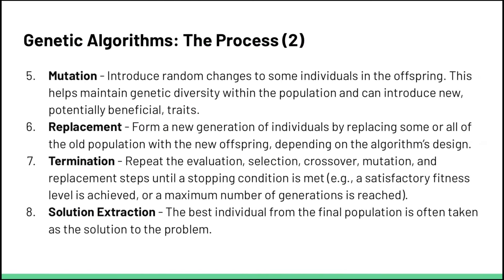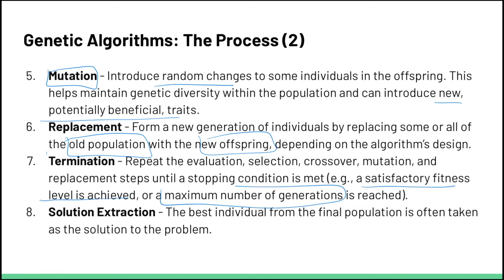Once we've combined both individuals together, we want to introduce some random changes to add genetic diversity and possibly get new solutions we haven't thought of. That process is called mutation, and it can introduce new potentially beneficial traits. Once we've combined all of the fit individuals, we're going to replace our old population of potential solutions with new offspring. We're basically going to repeat this whole process over and over again until we reach some satisfactory fitness level or a maximum number of generations is reached.